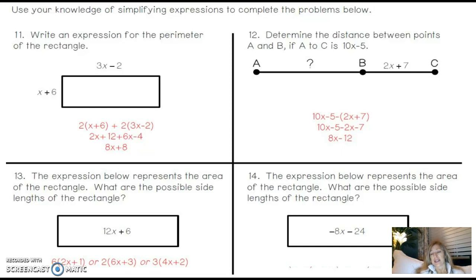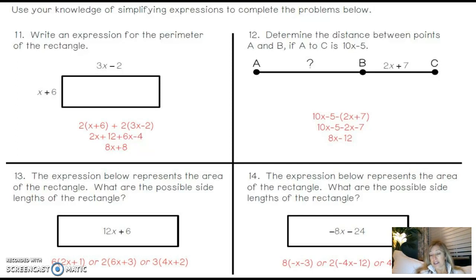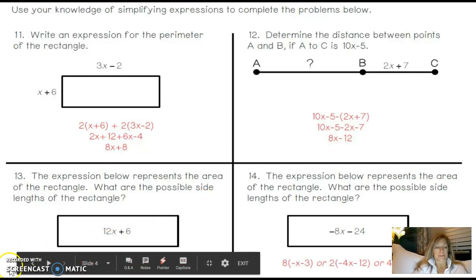Number 14 is the same kind of problem: the expression below represents the area of a rectangle — find possible side lengths. Try it the same way we did number 13. Pause the video and figure out what factors 8 and 24 share. Here are some solutions: three different options work because 8 is a factor, 2 is a factor, and 4 is a factor. Good luck — we're going to practice more of this.